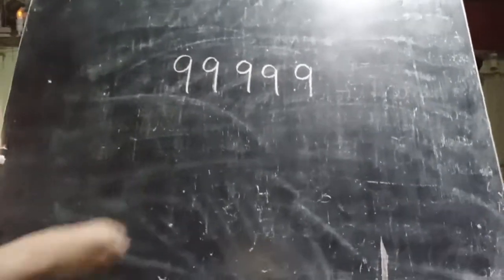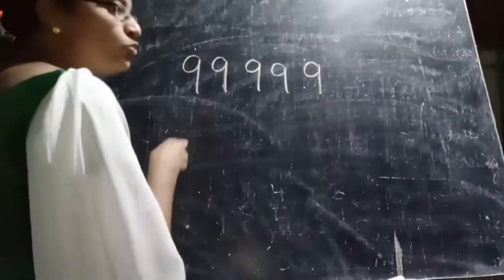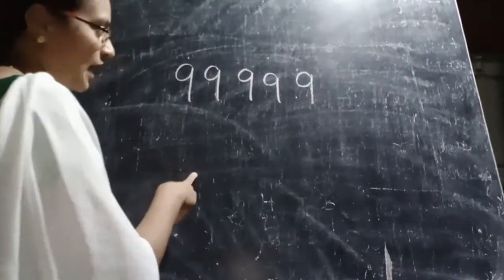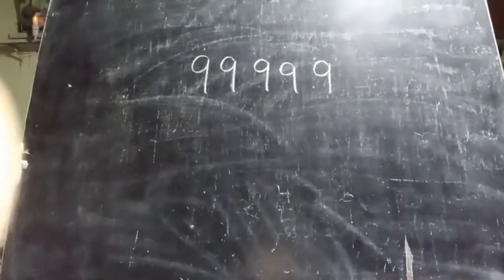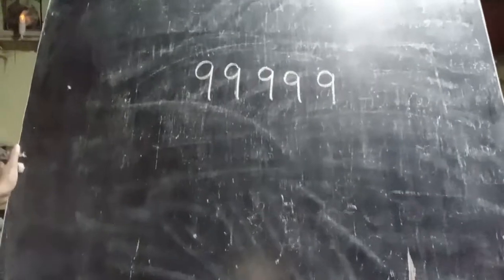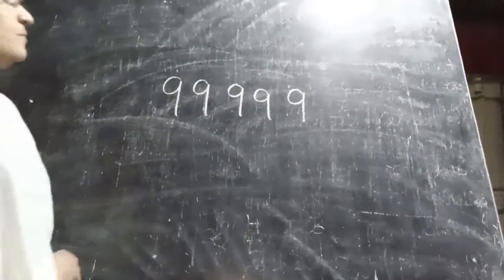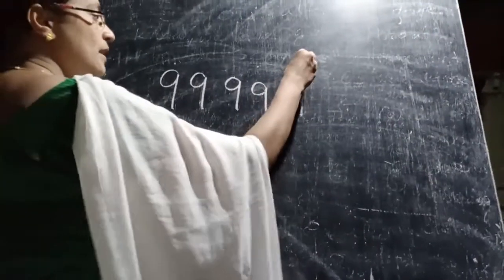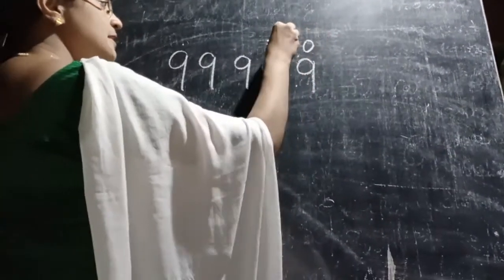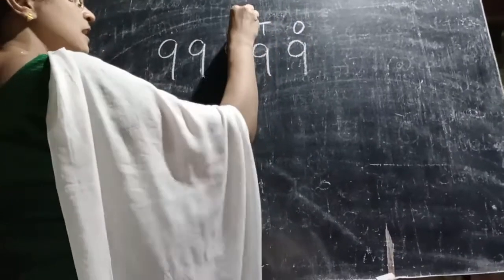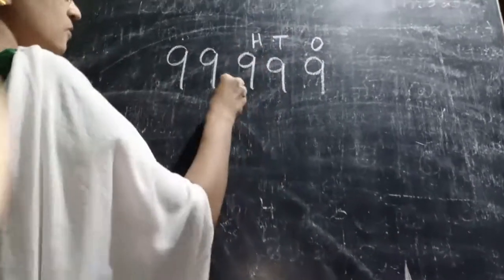How do we read and write this five-digit number using the Indian place value chart? We identify the ones period — ones, tens, hundreds — and the thousands period — thousands and ten-thousands.